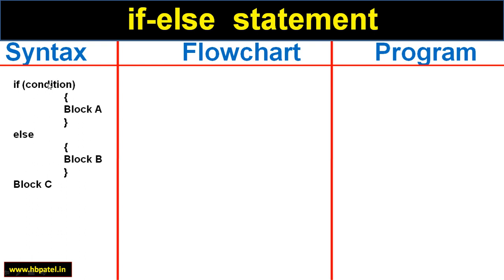So if the condition is true: block A, then block C. But if the condition is false, it will not go into the if body — it will go directly to the else part, execute block B, and then block C. To summarize: condition true → block A, block C; condition false → block B, block C.